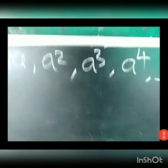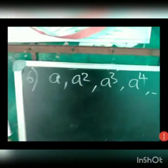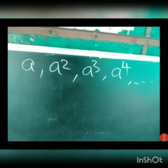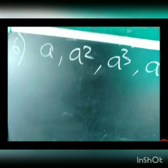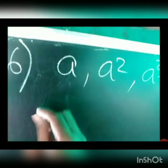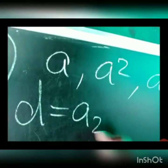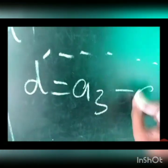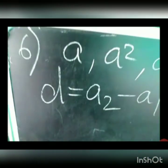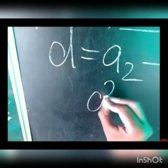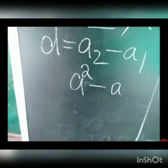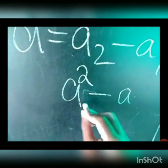The next problem: check whether a, a², a³, a⁴ forms an AP. Whenever they ask to check for an AP, write the common difference formula: d equals a2 minus a1 and d equals a3 minus a2. Here a2 is a² and a1 is a, so we compute a² minus a.